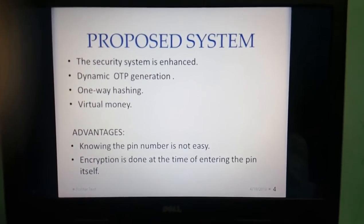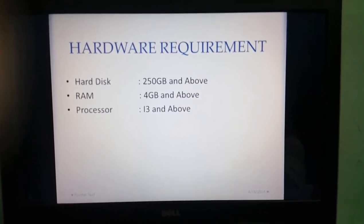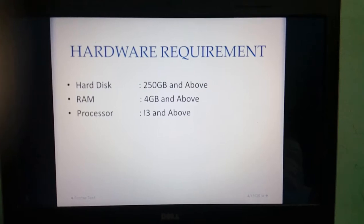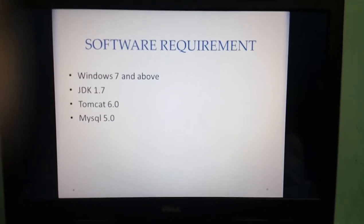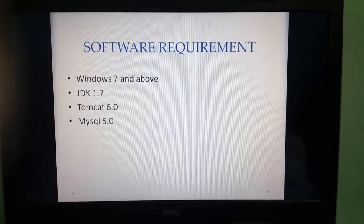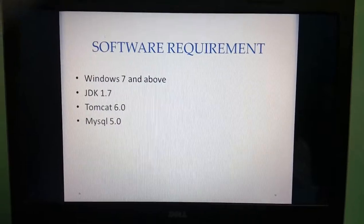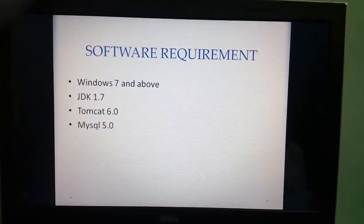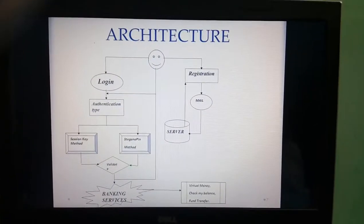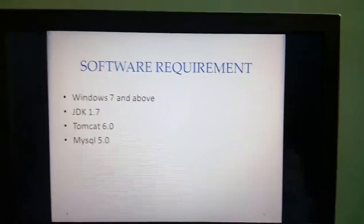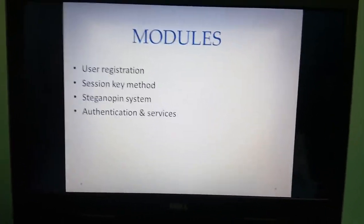The hardware requirements include a 250 GB hard disk, at least 4 GB RAM for fast execution, and an i3 processor. Software requirements are Windows 7 or higher, and Java, so that all classes are utilized to their maximum. Tomcat server is used as the bank server and SQL as the database. This is our overall architecture diagram, which has four modules.